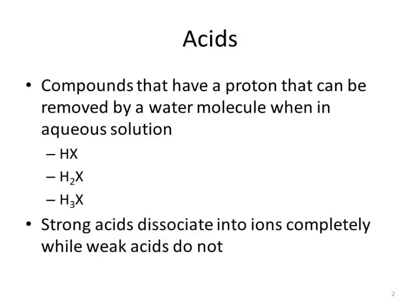We've looked at acids before when we did our nomenclature. We have a generic HX where H is the proton and X is whatever anion it's bonded to. This is monoprotic, this is diprotic, and this is triprotic.